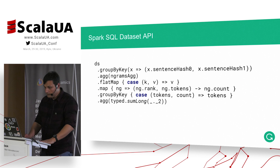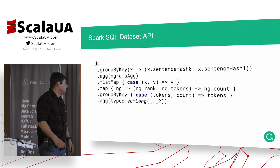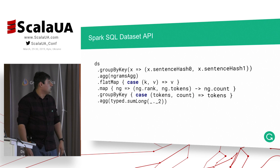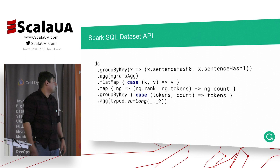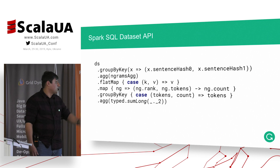When we scale this, we use the Spark SQL Dataset API, which is typed. We group by sentence hash, apply an aggregator, and then count these tokens with another aggregator — implemented by Spark itself — which is a sumLong.